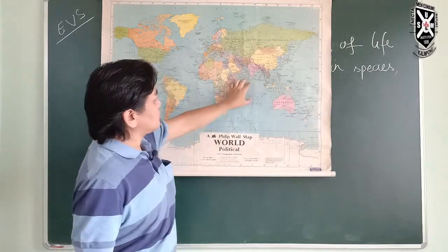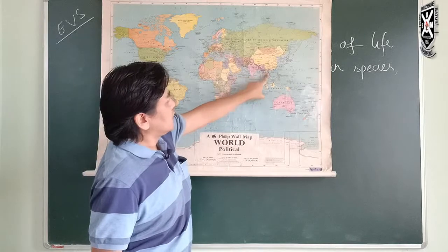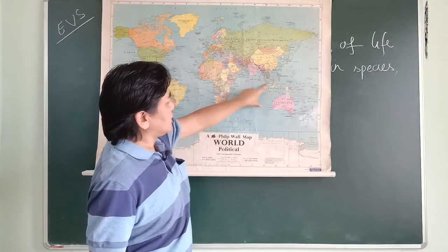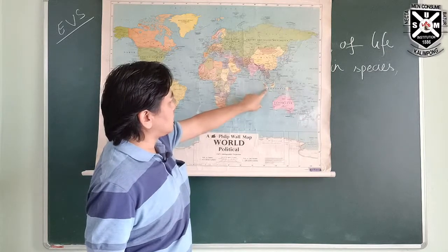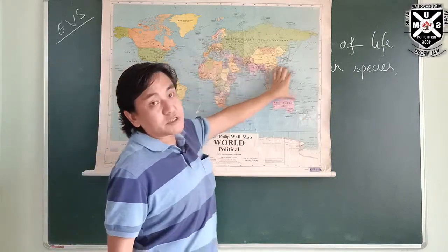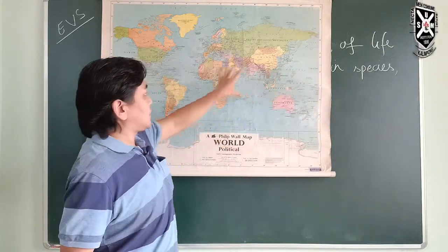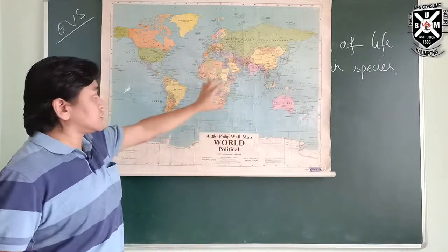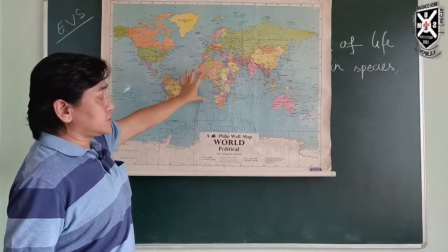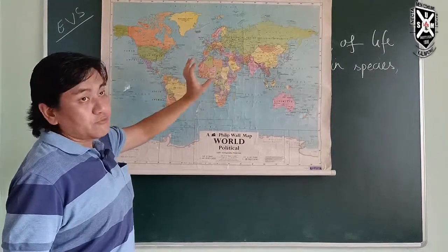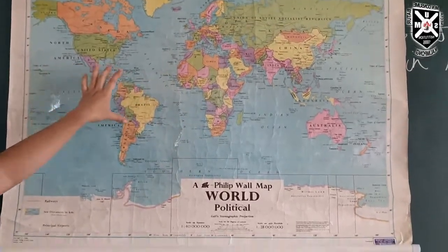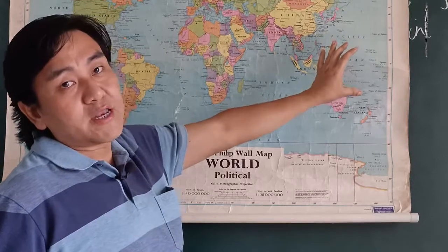We are also looking at the Indo-Burma region, the Andaman and Nicobar Islands, as hotspot zones. The factors supporting this biodiversity in this belt include mean temperature, mean climatic conditions, rainfall conditions, and humidity — all these characteristics support diverse animal and plant life.